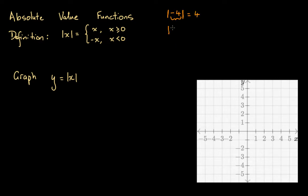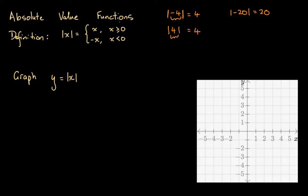Now the absolute value of 4 — again we're looking for the non-negative value. Well, 4 is already non-negative, it's a positive value. So the absolute value of 4 is also 4. If you were to face the question: what is the absolute value of negative 20? You'd say the non-negative value, or the magnitude associated with negative 20, is 20. That's generally how absolute values work.